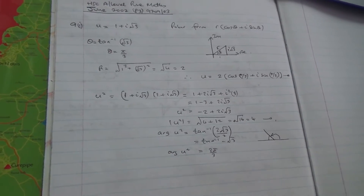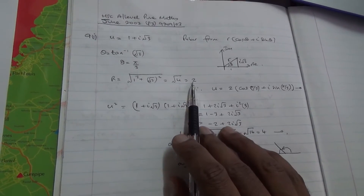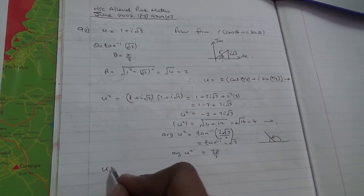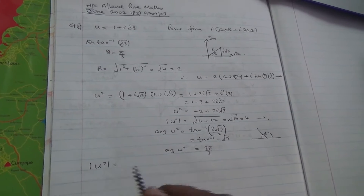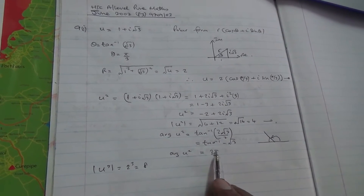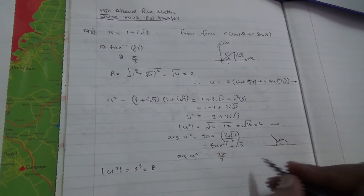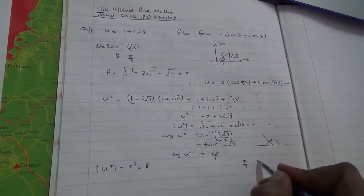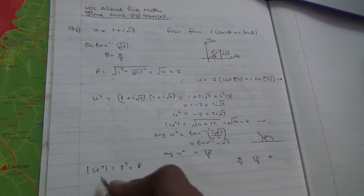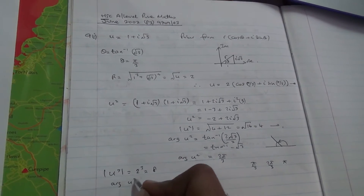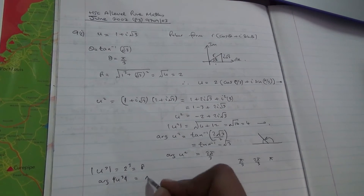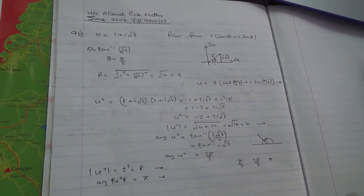For u cubed: the modulus of u cubed is 2 to the power of 3, which is 8. The argument follows the pattern — first π/3, then 2π/3, so now we get π. Therefore the argument of u cubed is π.